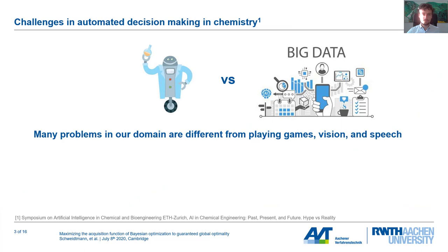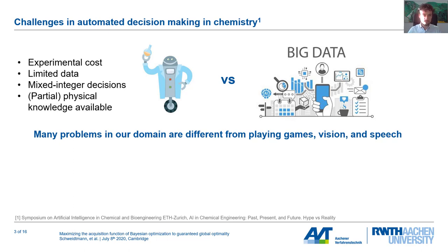When we compare the planning of chemical experiments to many big data problems that are solved through artificial intelligence, we can identify a few challenges. Many problems in our domain are very different compared to playing games, computer vision, and speech. In particular, we have quite high experimental cost that leads to limited data. We also have mixed integer decisions, meaning a combination between continuous variables such as pressure, temperature, flow rates, and integer variables such as what catalyst or solvent to use.